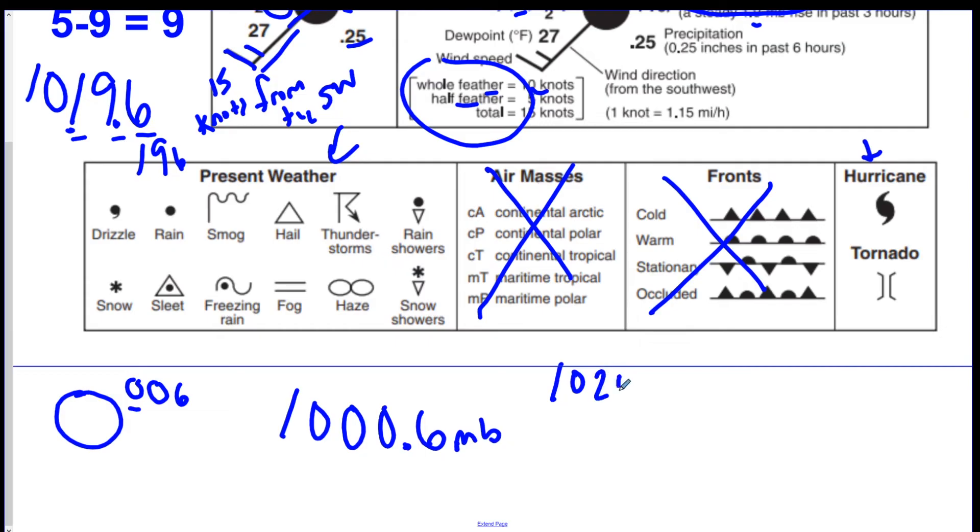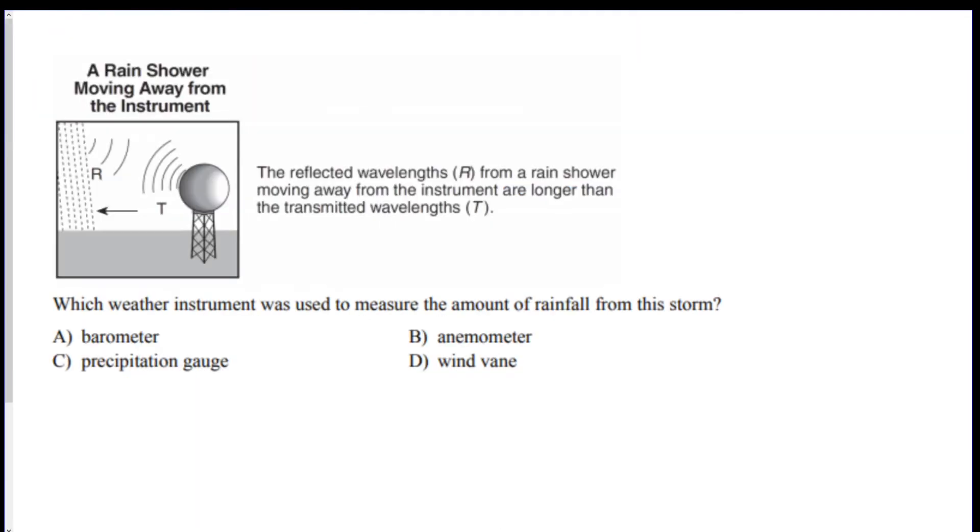Say the pressure is one thousand twenty point two millibars and they want you to put that on a station model. You would only take the last three digits. Two zero two. Done. You never put the unit millibars on a station model.